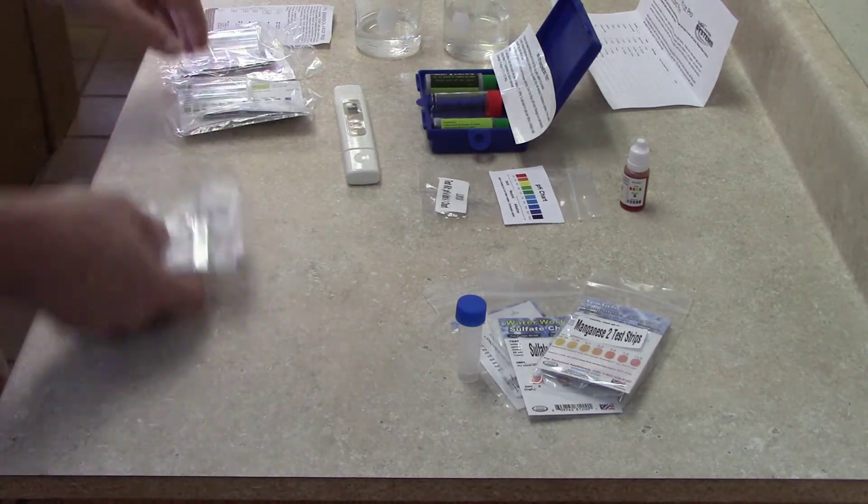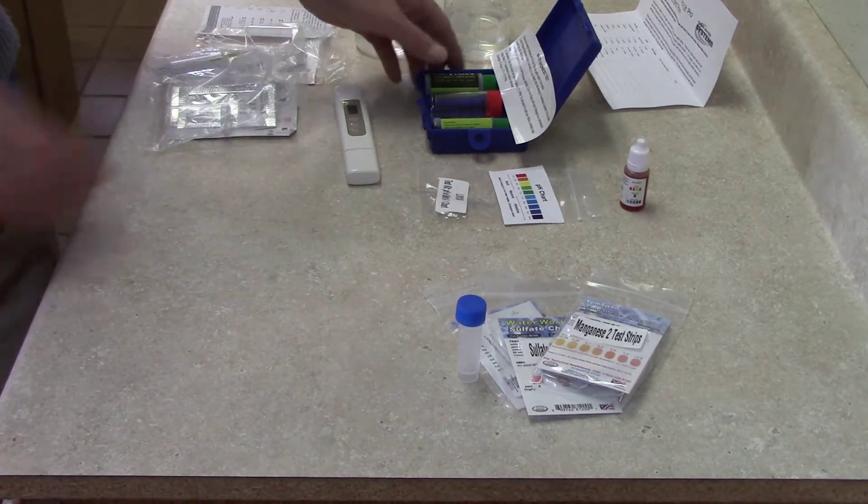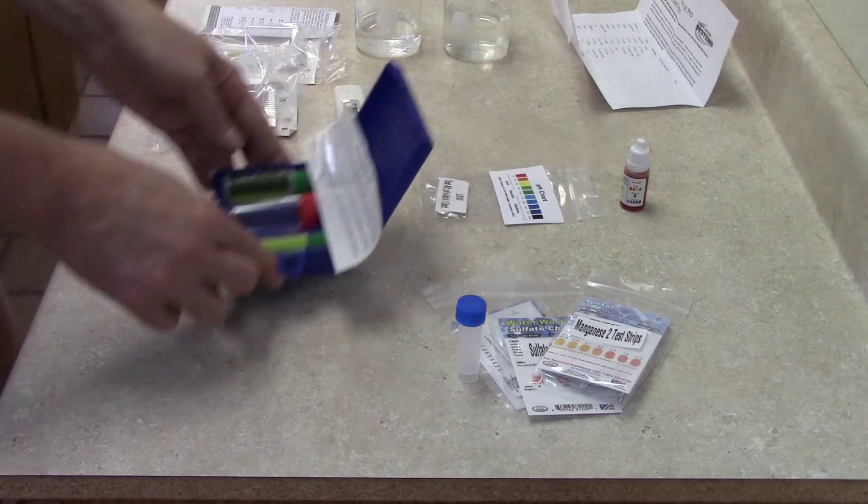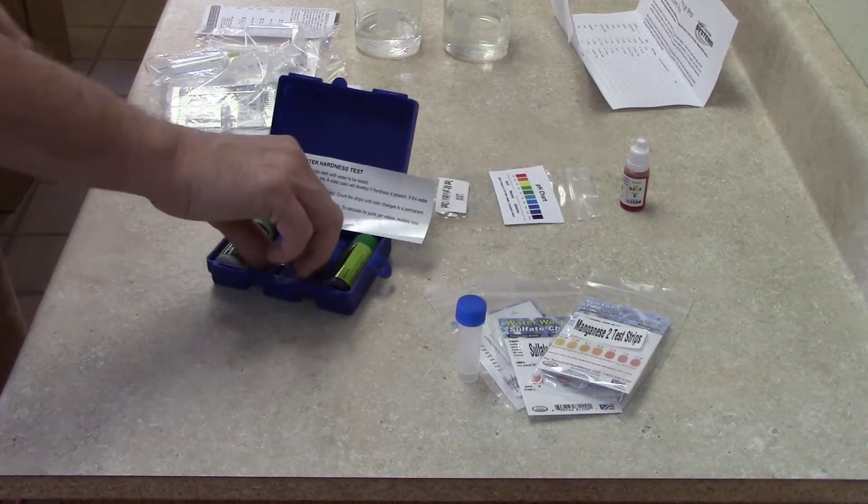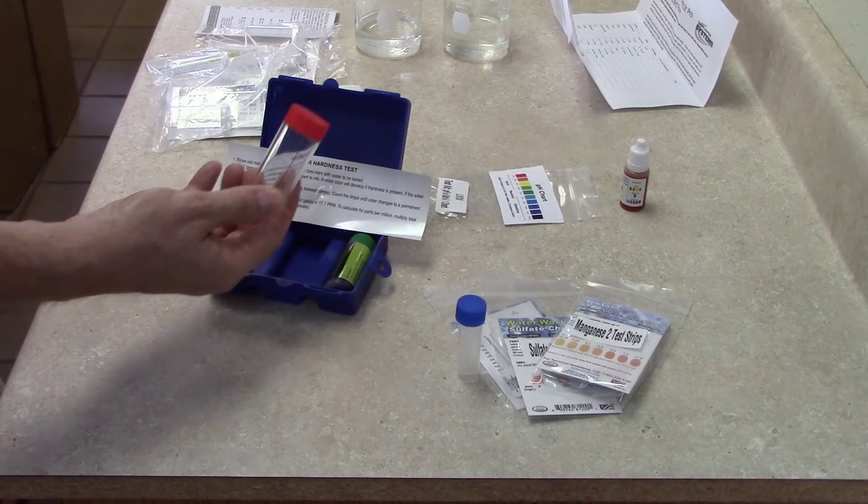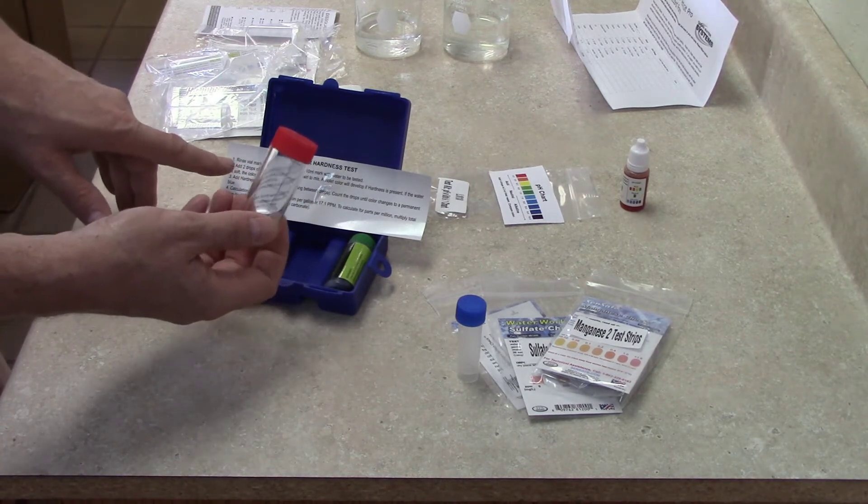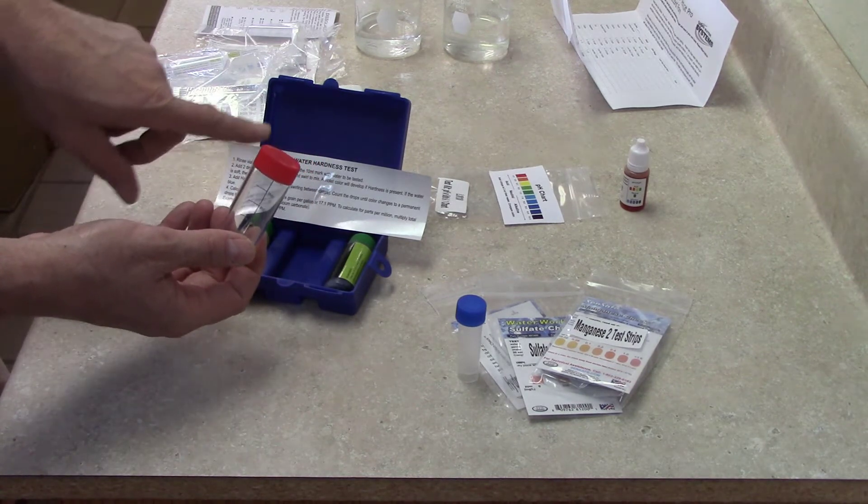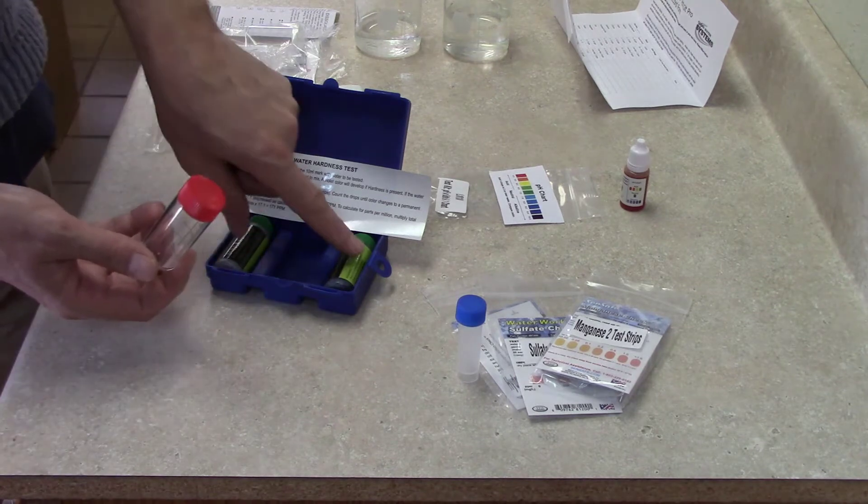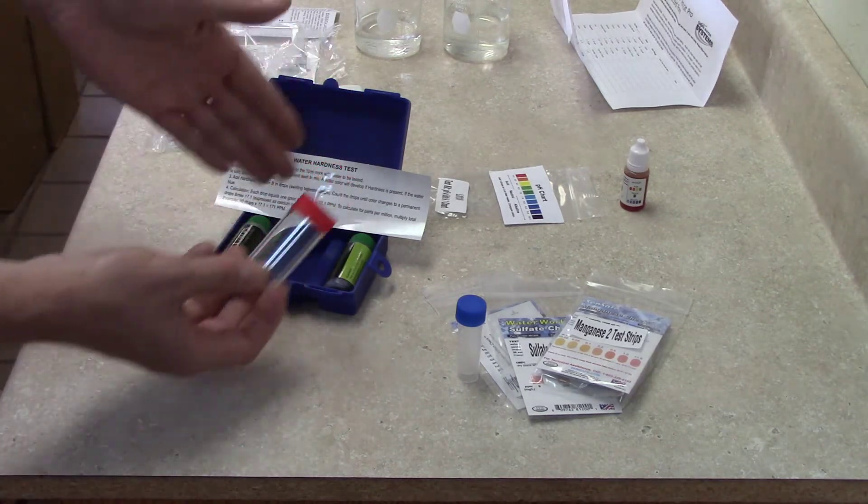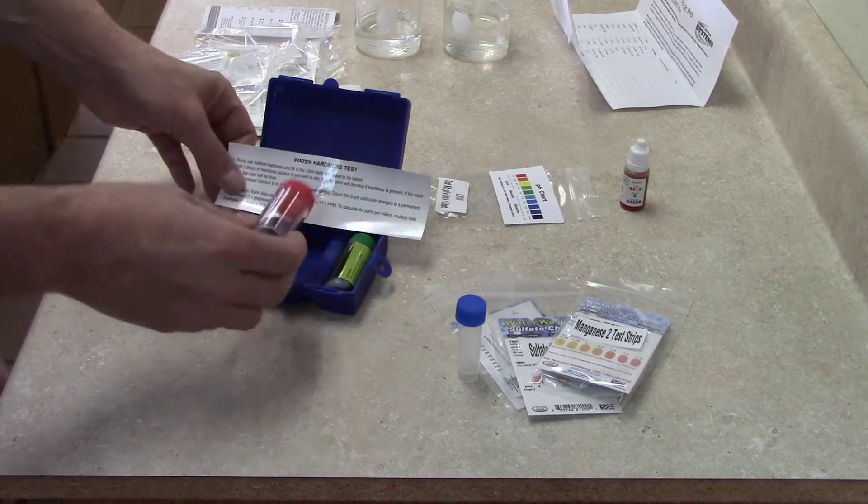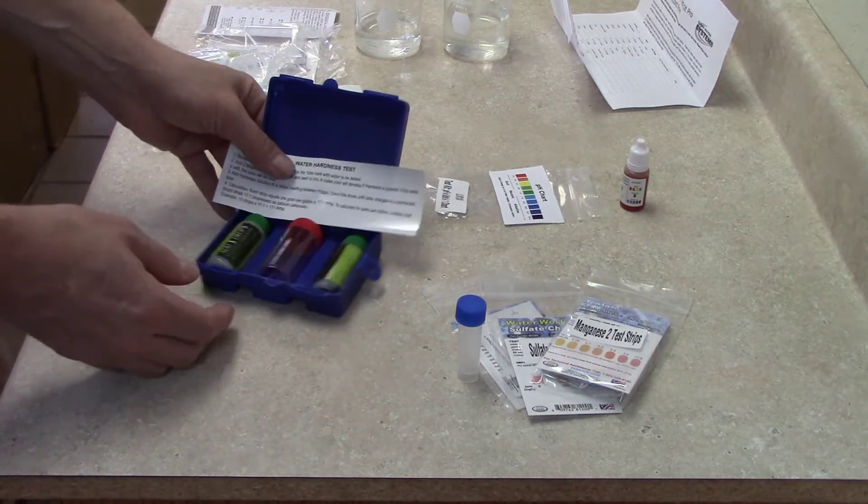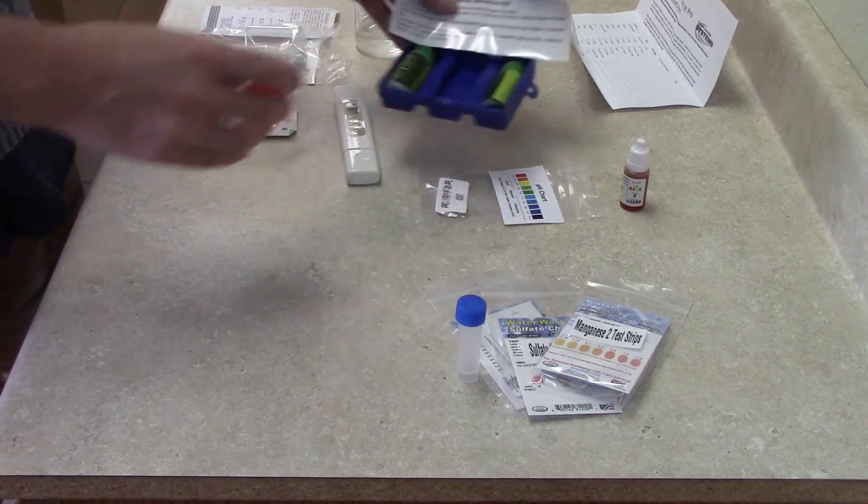Then we have the water hardness test kit, which uses drops. It's got the vial in there. You add some water, then add drops of one solution, wait a bit, then start adding drops of another. Follow along with the instructions and that'll determine your water hardness.